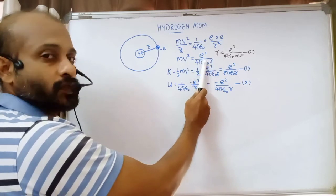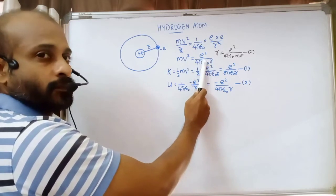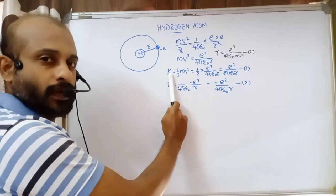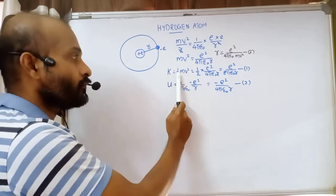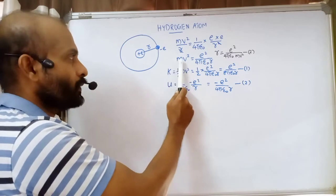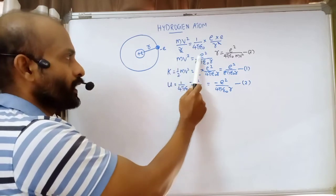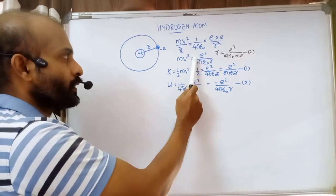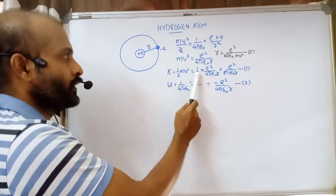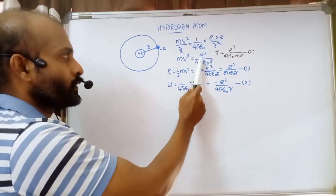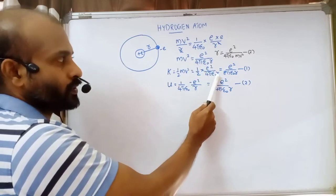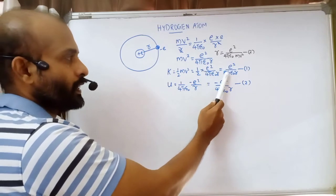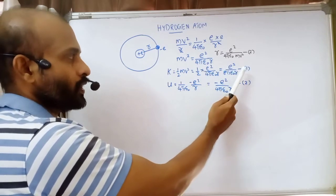We need kinetic energy, which is half mv². Multiplying by a half, we get kinetic energy equal to one half times e squared by four pi epsilon zero r, which simplifies to e squared by eight pi epsilon zero r. This is equation number one, giving the kinetic energy of the electron revolving in the orbit.